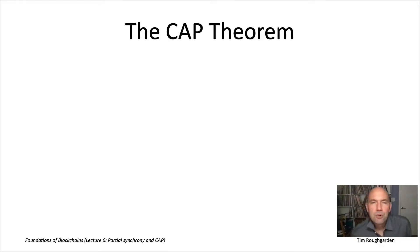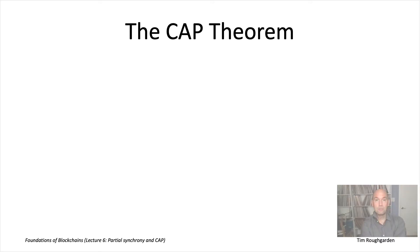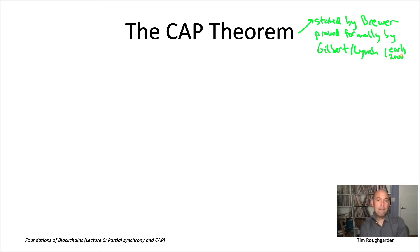I want to wrap up lecture six by connecting what we've been discussing thus far to a famous principle in distributed systems known as the CAP theorem, which is an articulation of fundamental trade-offs that come up over and over again in the design of distributed systems. The CAP theorem was first stated by Eric Brewer, and then was proved not long after by Seth Gilbert and Nancy Lynch.